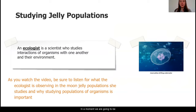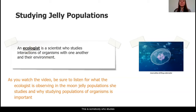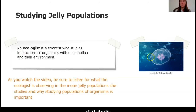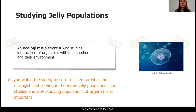In a moment we're going to be watching a video and be introduced to a type of scientist we'll be working with over the next few weeks. This scientist is called an ecologist — somebody who studies interactions of organisms with one another in their environment. When I say organisms I mean living things like animals and plants. The specific type of organism this scientist studies are called jellyfish or jellies. As you watch the video, listen carefully to what she has observed about the moon jelly populations and why she thinks it's important to study different populations of organisms.